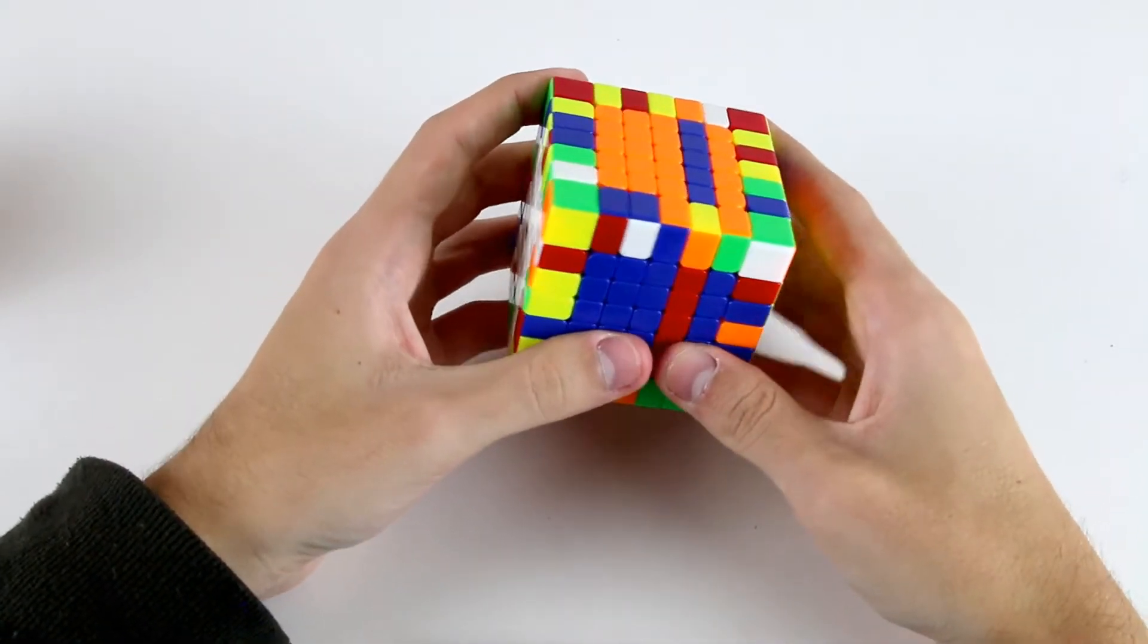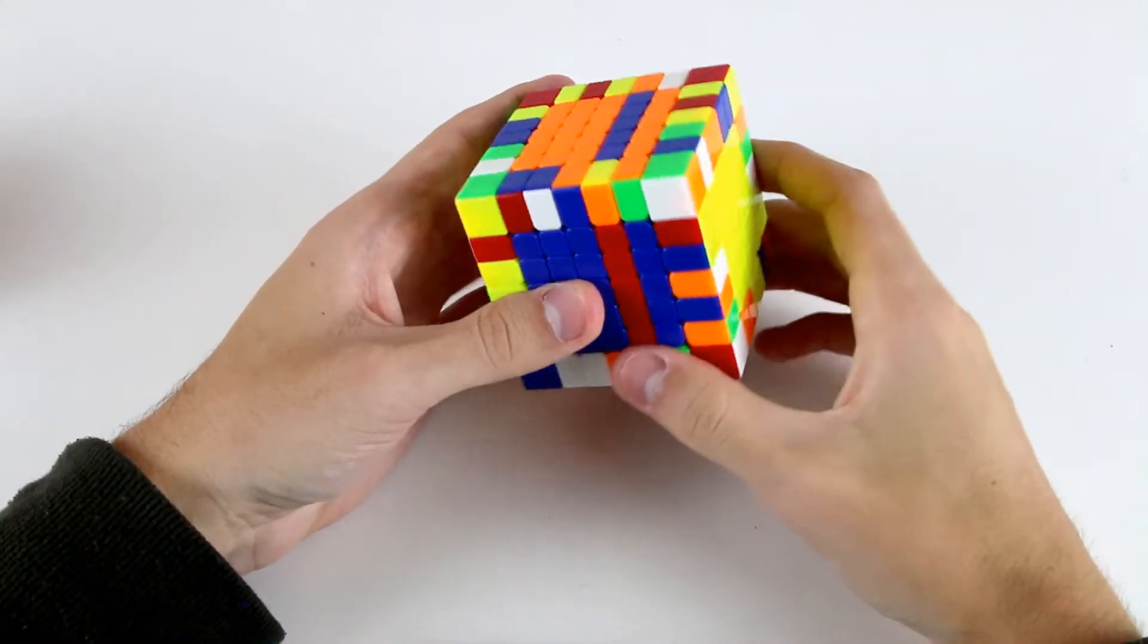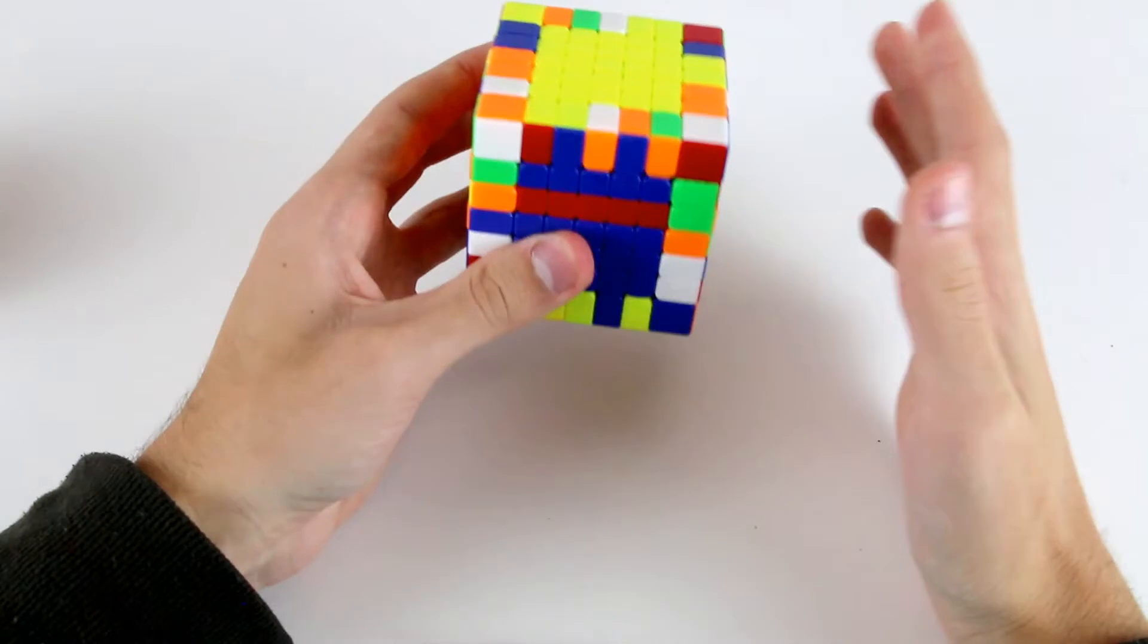In most cases it's actually better to not restore your centers with this slice move and then start pairing your edges perhaps on this axis.